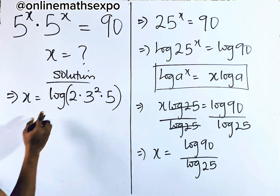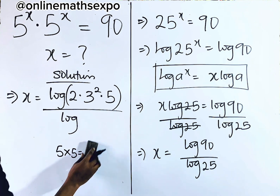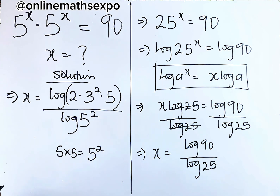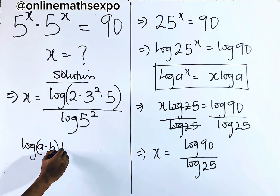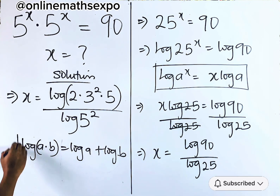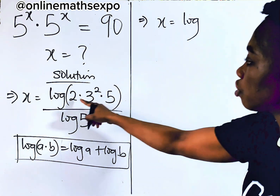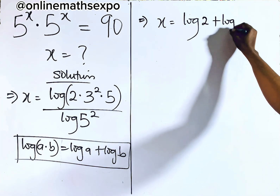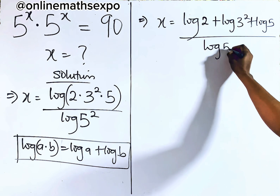This is giving us 90. Then divided by: 25 is 5 times 5, which is 5 raised to the power of 2. So instead of writing 25, we now have log of 5 squared. For the numerator, applying the log product rule — for every log of A multiplied by B, it equals log of A plus log of B — we have x equal to log of 2 plus log of 3 squared plus log of 5, all divided by log of 5 squared.